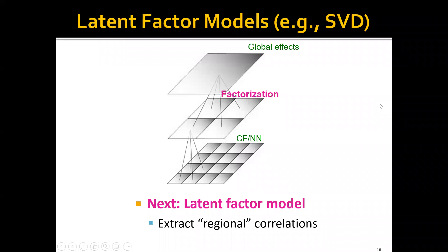Remember that the winning solution for the Netflix prize has three levels of models. Until now we have covered the global model which handles global effects and the collaborative filtering model that handles local effects. Next we'll talk about the matrix factorization model, or the latent factor model, that extracts regional correlations.